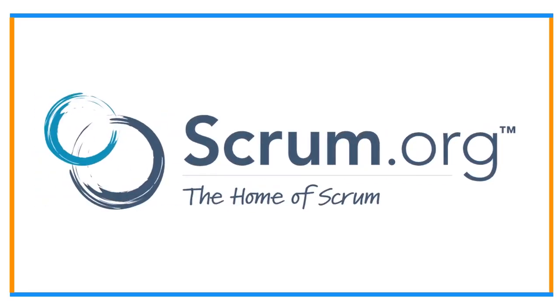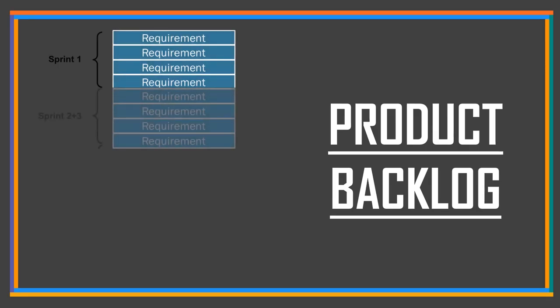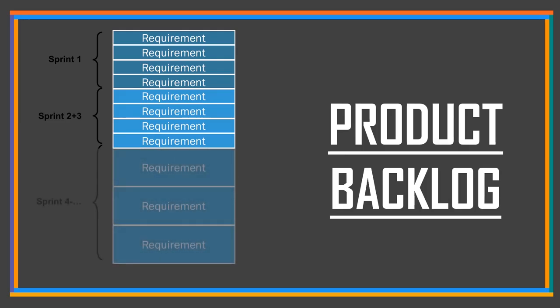We will talk about two backlogs: the Scrum product backlog and the sprint backlog. The Scrum product backlog is simply a list of all things that need to be done within the project. It replaces the traditional requirements specification artifacts. These items can have a technical nature or can be user-centric, for example in the form of user stories.